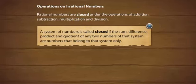The word closed simply refers to the fact that the sum, difference, product and quotient of two rational numbers will always be a rational number.